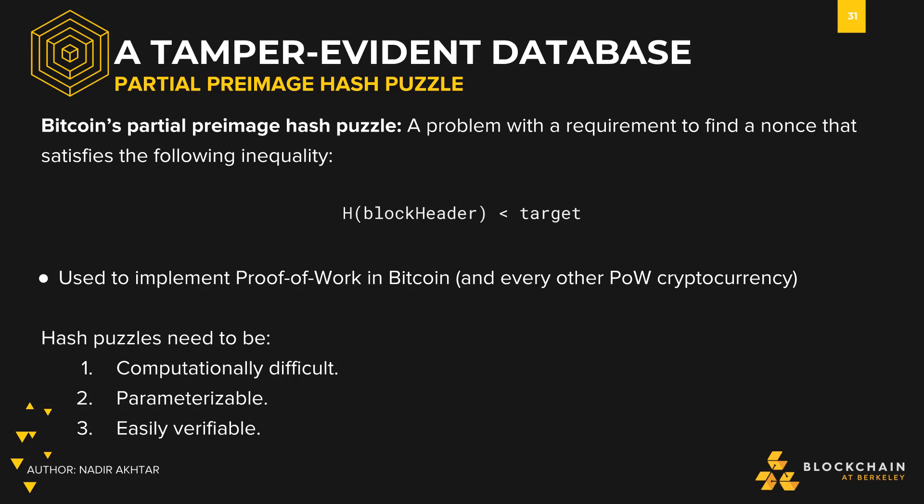The way we do this in Bitcoin is with a partial pre-image hash puzzle. Keep in mind the definition of pre-image from before, which was the input. Partial pre-image then means a partial input. In Bitcoin, we're given part of an input and we have to find the other part which produces some particular output. The condition that needs to be met is that the hash of the block header is less than some target value.